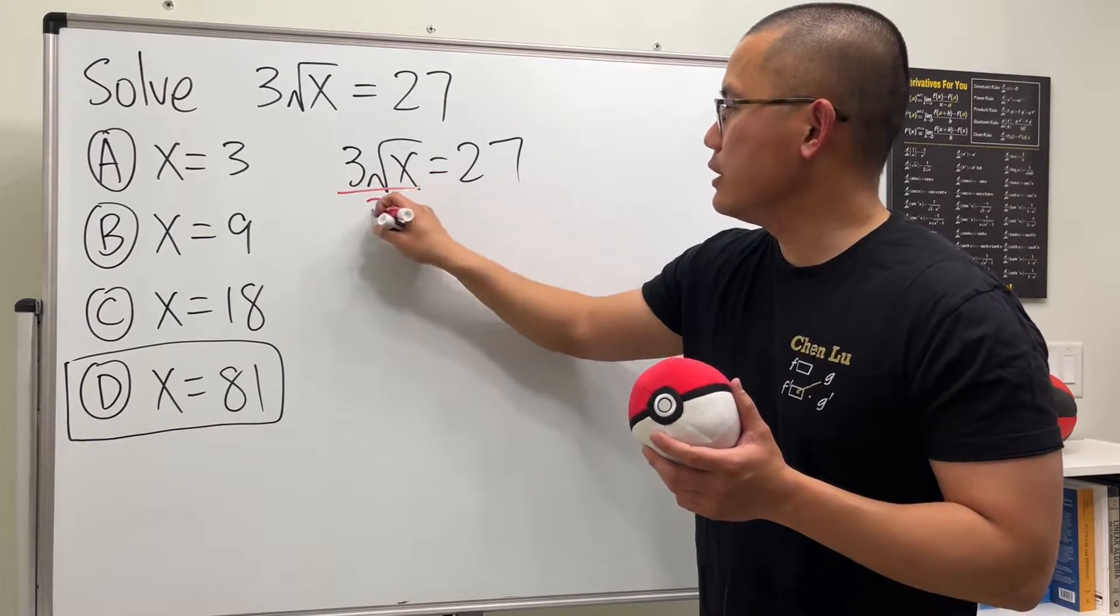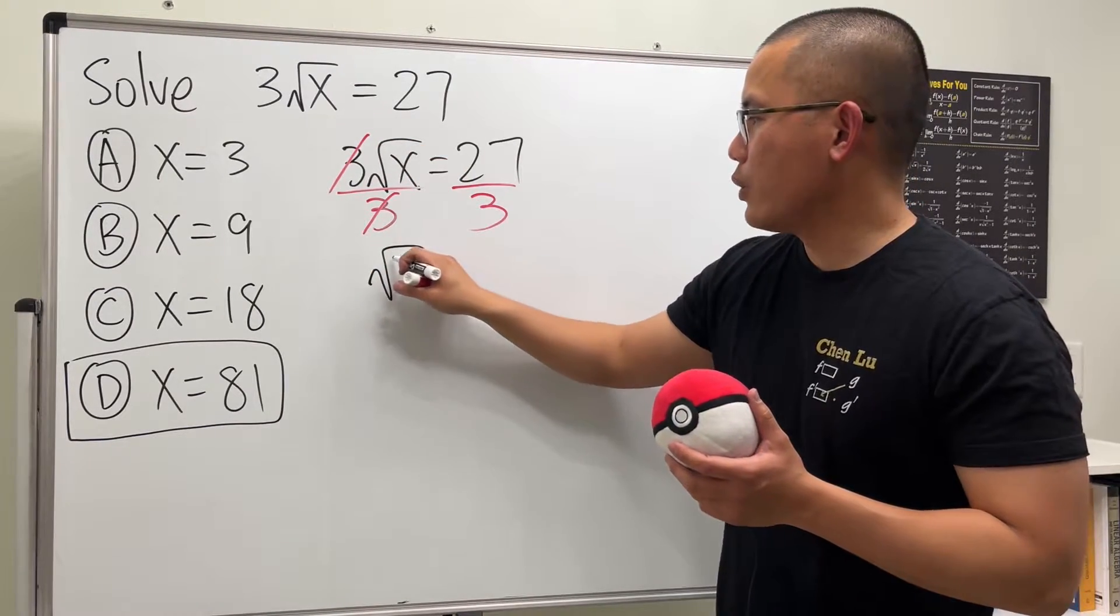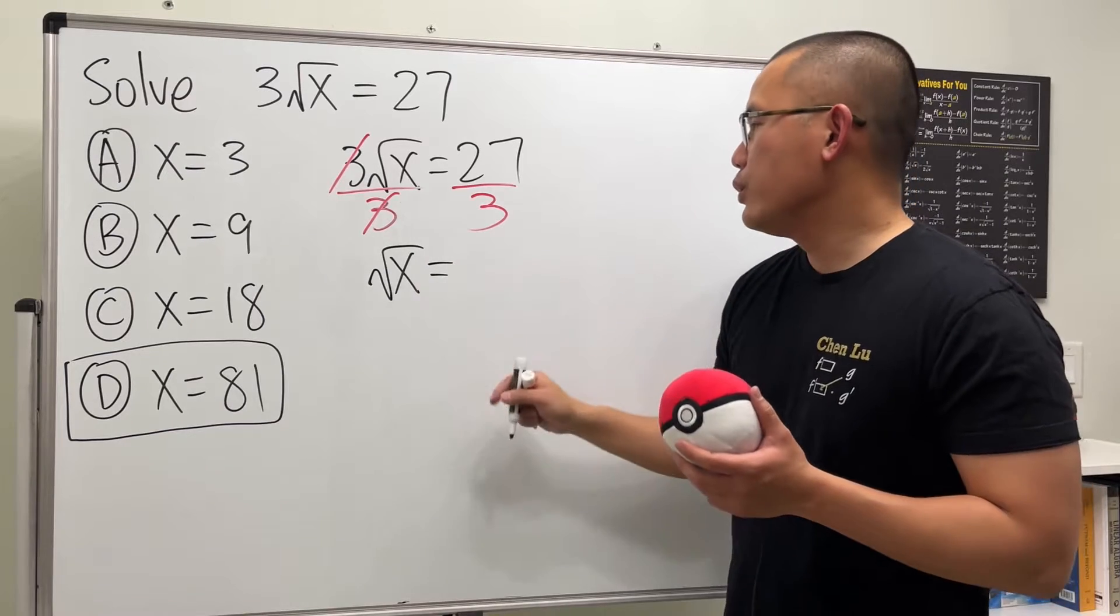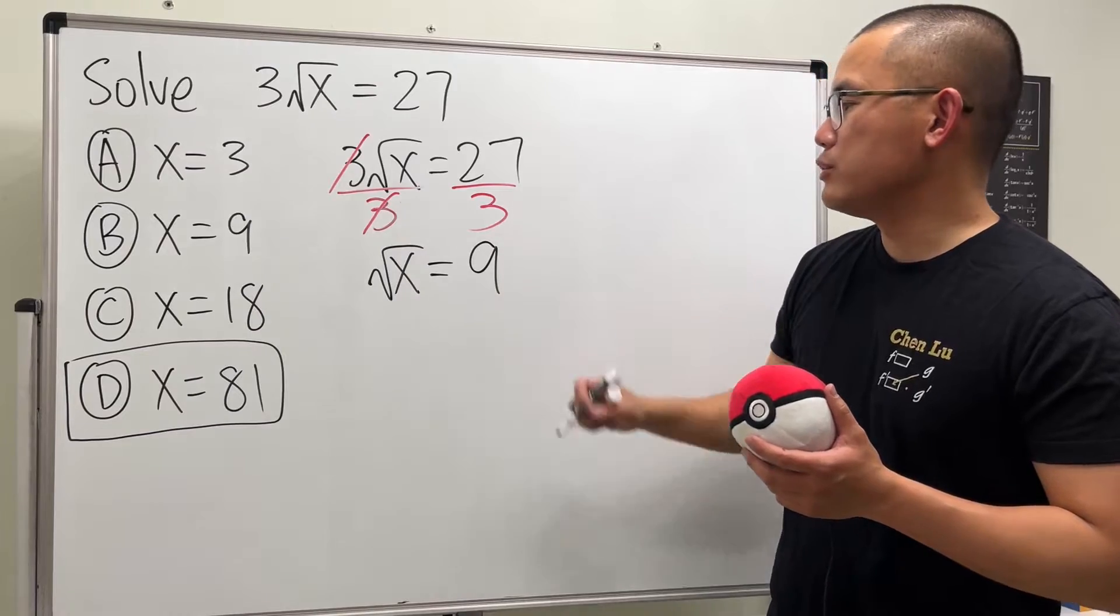So let's go ahead and do this. So this and that will cancel. And then we will have the square root of x. And that's equal to 27 over 3 is 9. Right? 27 divided by 3 is 9.